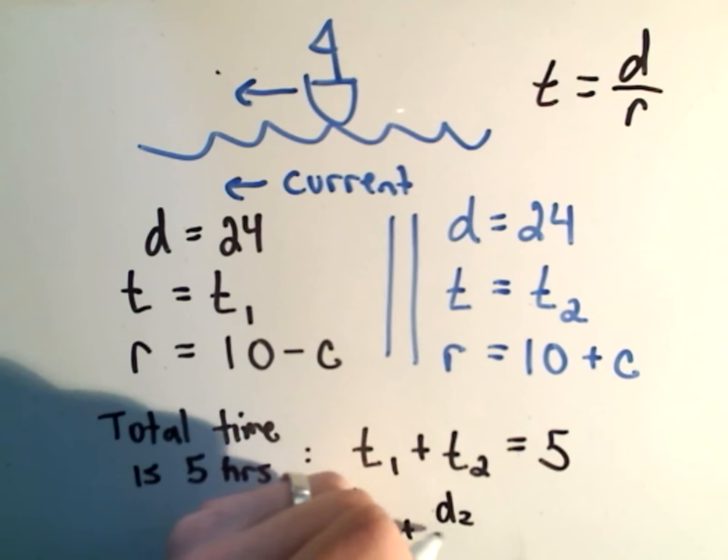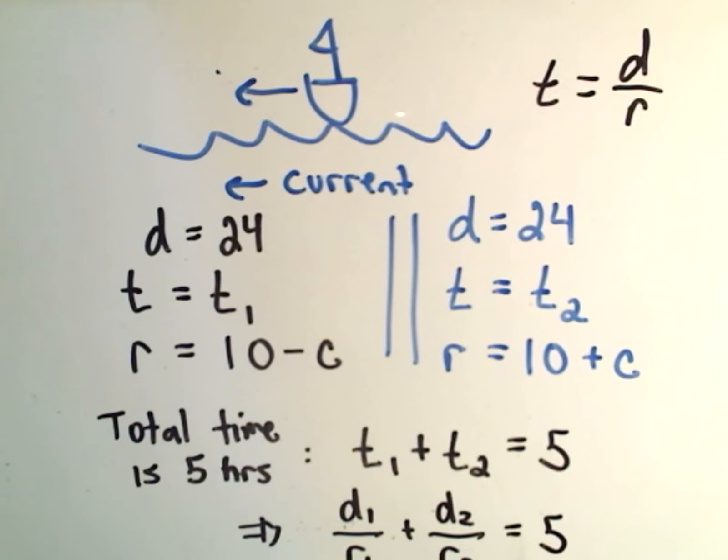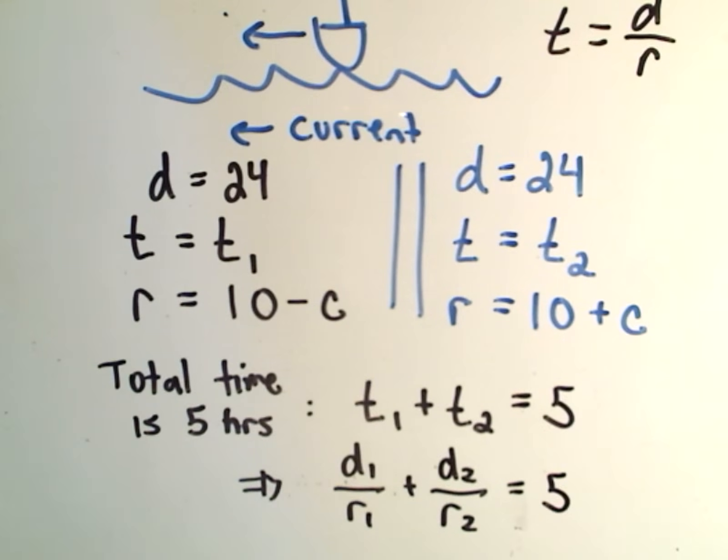So it says T1 would be the first distance divided by the first rate. T2 would be the second distance divided by the second rate. And again, we know that equals 5 total. Well, again, if I plug in my information here now,